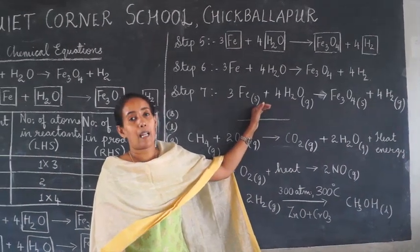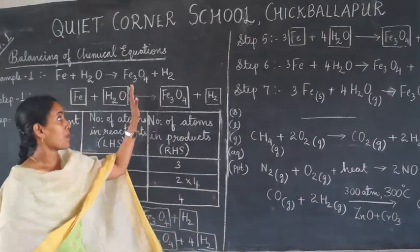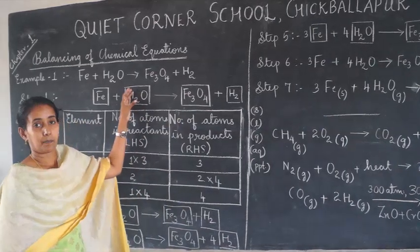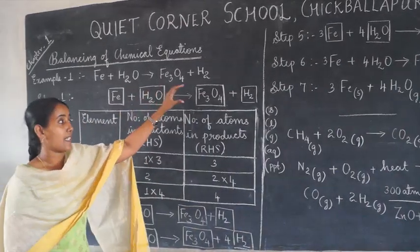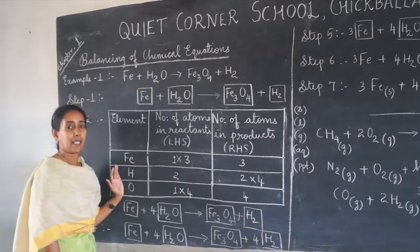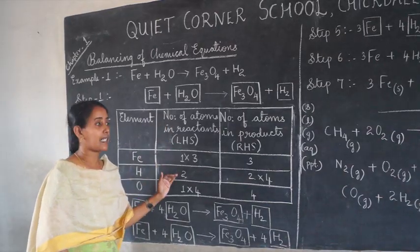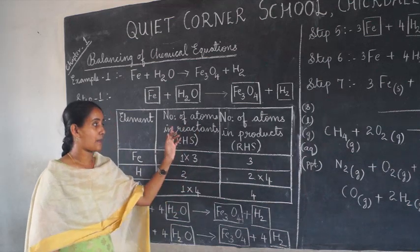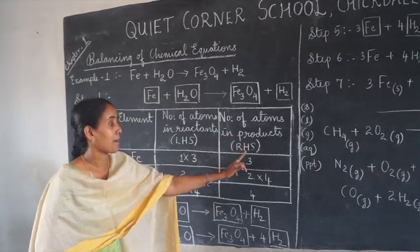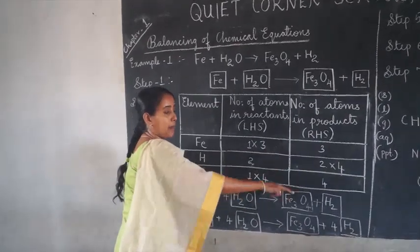So this is the final step of balancing chemical equations. To summarize the steps: first, write the chemical equation with each compound in boxes; then identify each element and write the number of atoms on the reactant side (LHS) and the product side (RHS).